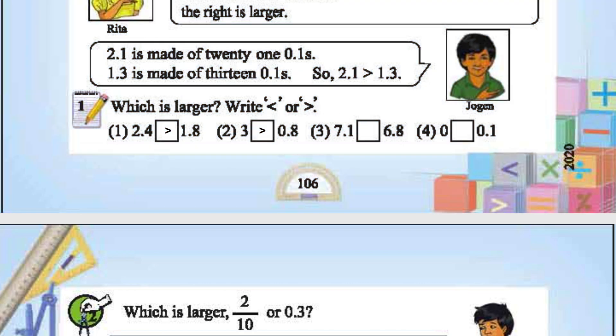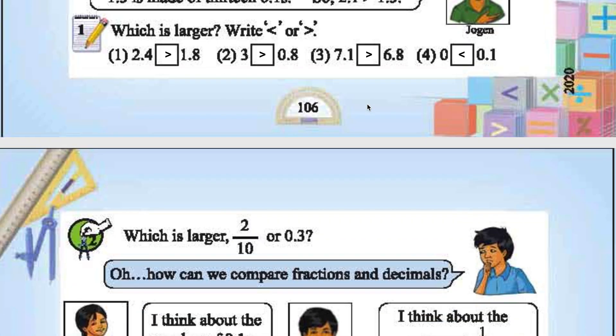7.1 is 6.8. 7 is greater than 6.8. 7 is greater than 6.8. So 7.1 is greater than 6.8. Which is greater? 0 or 0.1? 0.1 is greater. So 0 is less than 0.1.